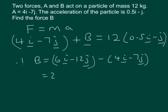6 minus 4 is 2, minus 12, take away minus 7, is minus 5. So that's what B is.